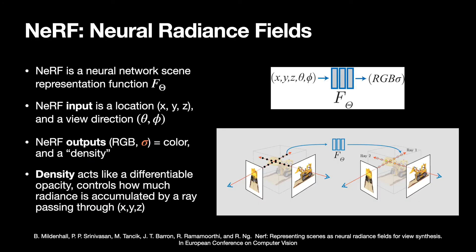The function f, parametrized by weights theta, maps spatial location and view direction to the volume density and view-dependent emitted radiance at that spatial location. The density sigma acts like a differentiable opacity and can be used for depth rendering.